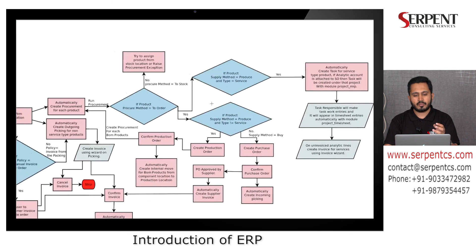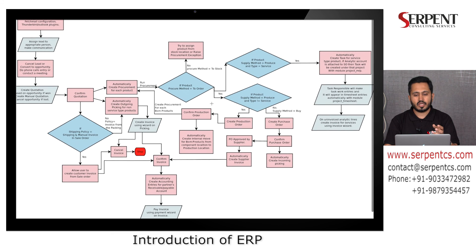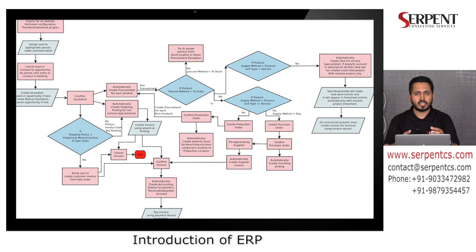This is the complete diagram of the ERP process — how we get a new lead, start processing leads, and how all the modules are integrated and reflect entries in other modules. This was the basic introduction about the complete process inside ERP and how each and every department and module is integrated. It will vary based on different natures of business — for NGO, non-profit, medical, or education fields it will change — but this is the basic overview and integration process of any ERP in the world. This is how Odoo works and how all the modules are integrated.